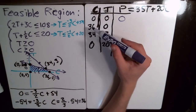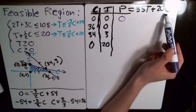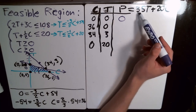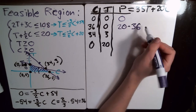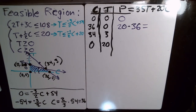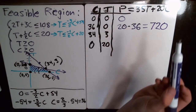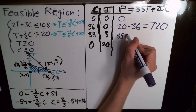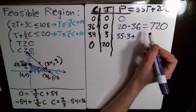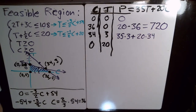At (36, 0): 36 chairs and 0 tables. Profit = 35×0 + 20×36 = 720. At (34, 3): 34 chairs and 3 tables. Profit = 35×3 + 20×34 = 105 + 680 = 785.